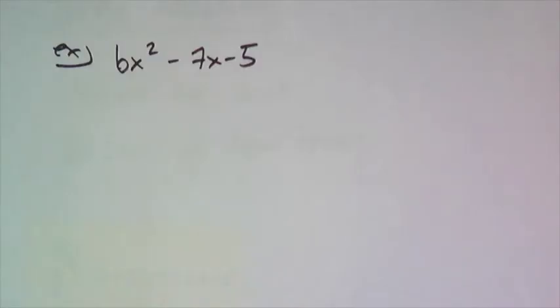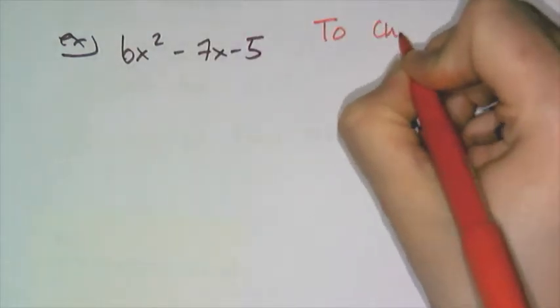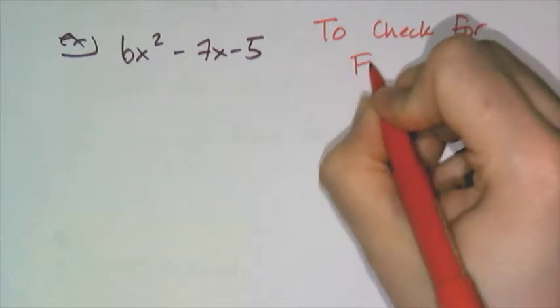I could use guess and check, or I could use logic or some other method. I'm going to use the grouping method. But before I do that, I want to talk about things that are going to be prime and how you can tell if they're going to be prime, meaning not factorable. Let's talk about how to check for factorability.